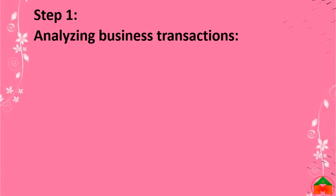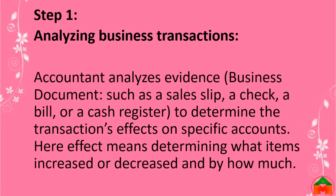Step one: analyzing business transactions. The accountant analyzes evidence — that means business documents such as a sales slip, a check, a bill, or a cash register receipt — to determine the transaction's effect on specific accounts. This effect means determining what items increased or decreased and by how much.